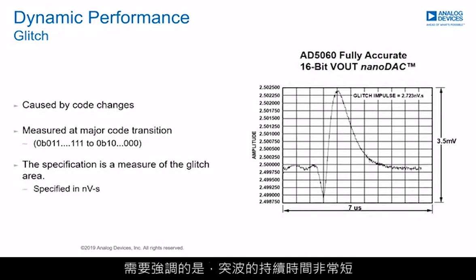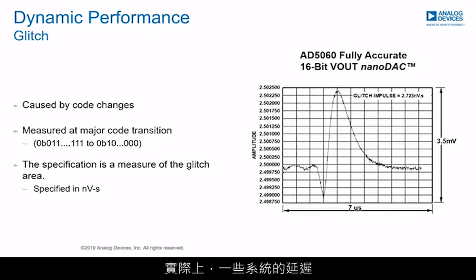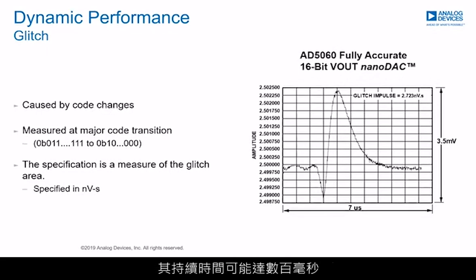The important point to emphasize is that glitch occurs over a very short duration. While it may be easily observed on an oscilloscope, the end application may have a much slower response time, so the glitch is invisible to the system. Indeed, the delay of some systems can be dominated by PID control algorithms, which can have a hundreds-of-milliseconds iteration time.